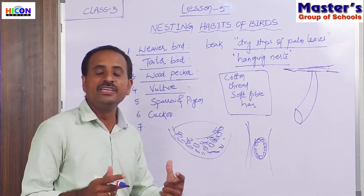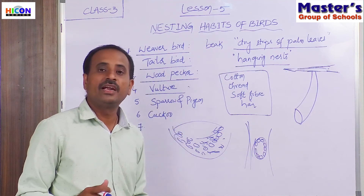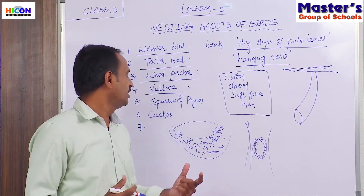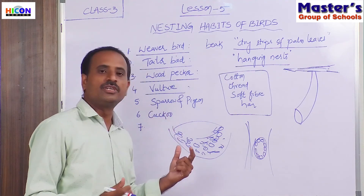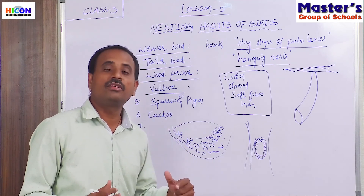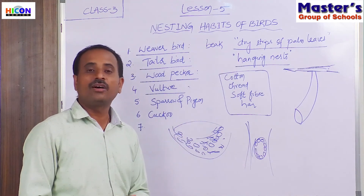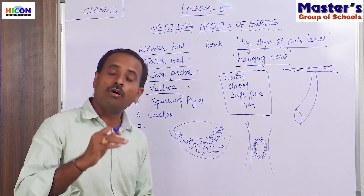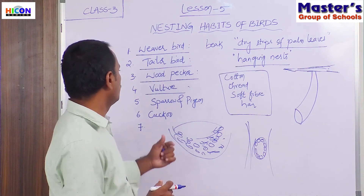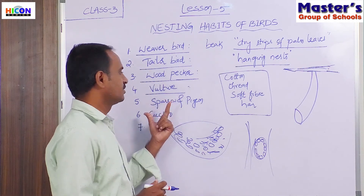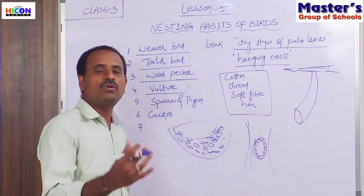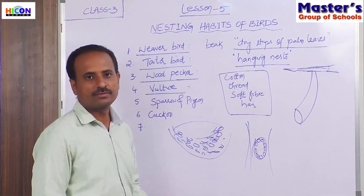Generally the vulture builds its nest high above the trees — on larger trees and at the top end of the trees. The vulture uses small sticks to build its nest.